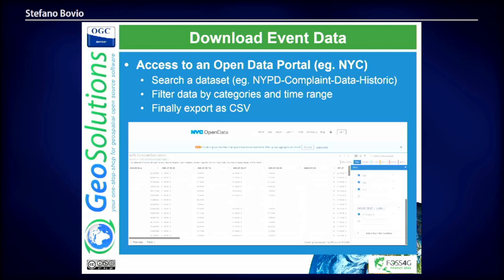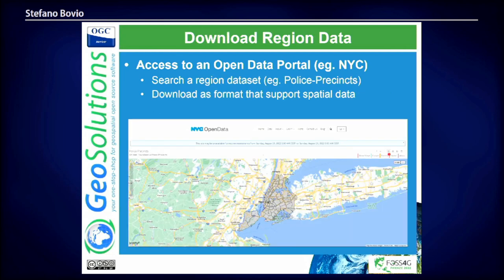Here is an example of how we used the New York Open Data Portal. We found data related to complaints where some fields fit our use case. We pre-filtered the data to include only the categories we needed and to choose a specific time range, then exported it as CSV. For the region, we looked for precincts and downloaded a format containing spatial information — a GeoJSON or shapefile — that could then be imported into a PostGIS table.